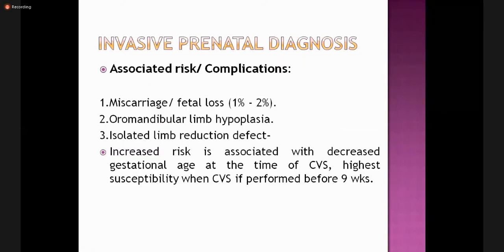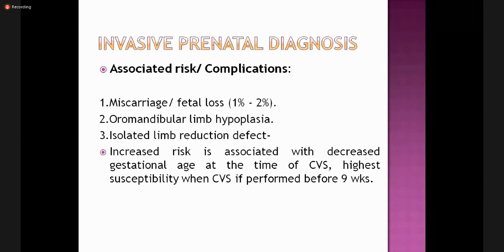The associated risks of invasive prenatal diagnosis include miscarriage or fetal loss of one to two percent, limb hypoplasia, and isolated limb reduction defects. Increased risk is associated with lower gestational age at the time of CVS, with highest susceptibility when CVS is performed before nine weeks of gestation.